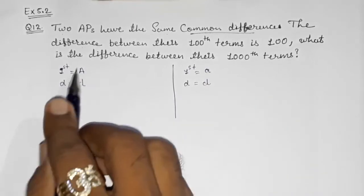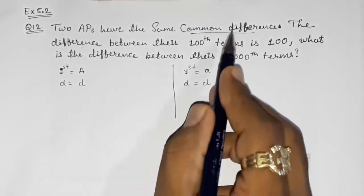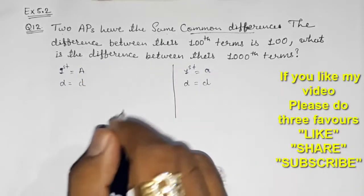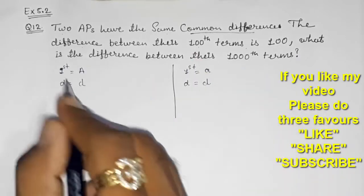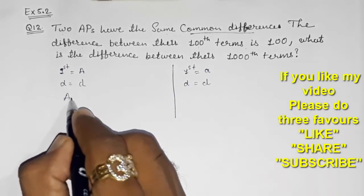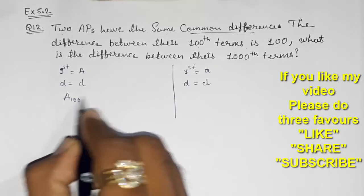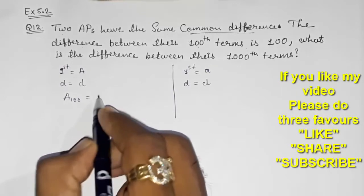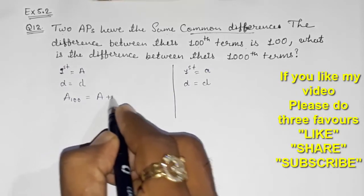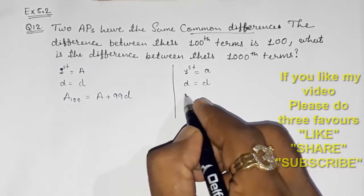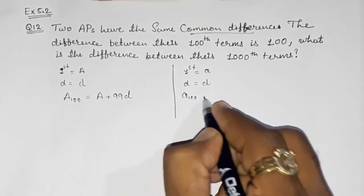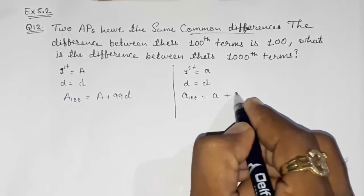I am taking d because a are different but d, the common differences, so d I have taken as d only. Now they told us that the difference of their 100th term is 100, so I am going to subtract it. What will be this 100th term? A₁₀₀ will be equal to A + 99d.